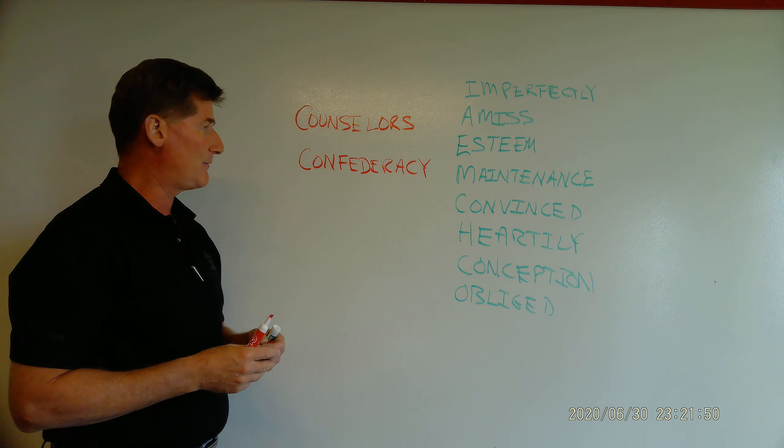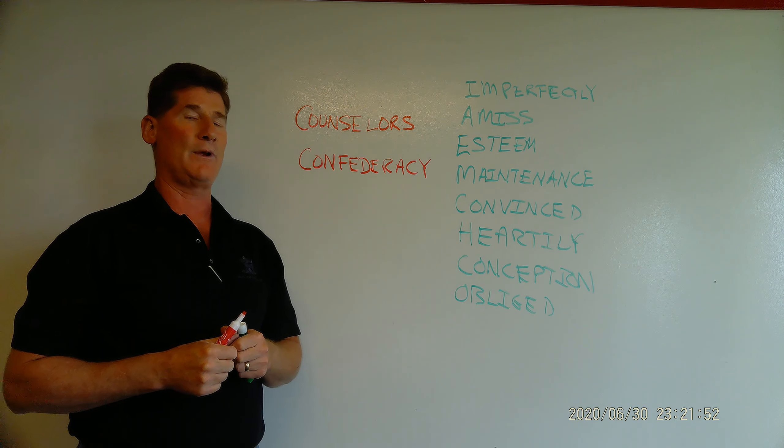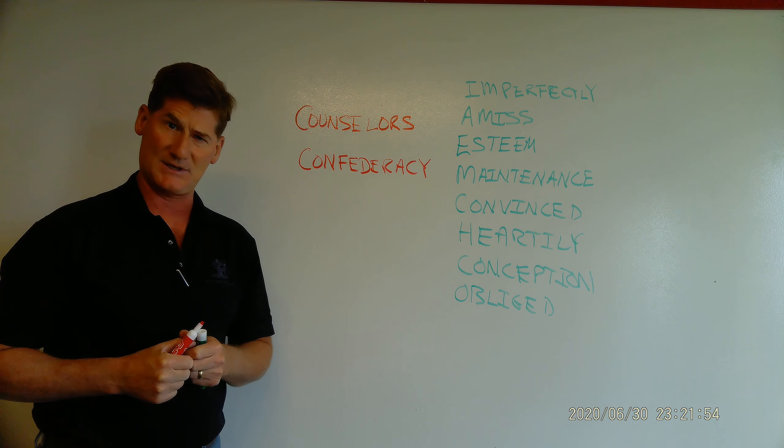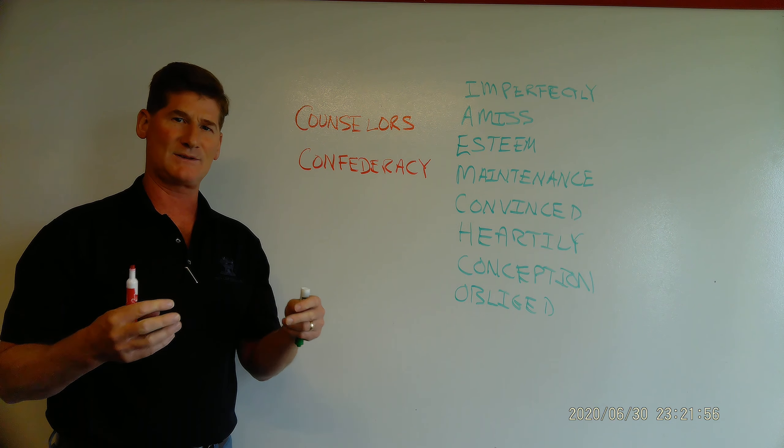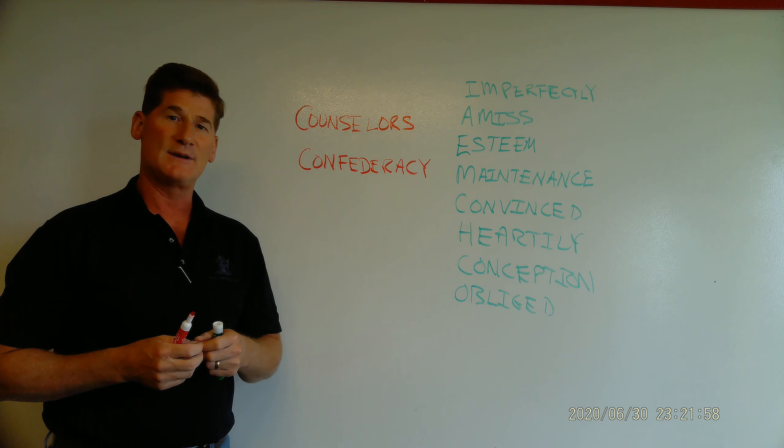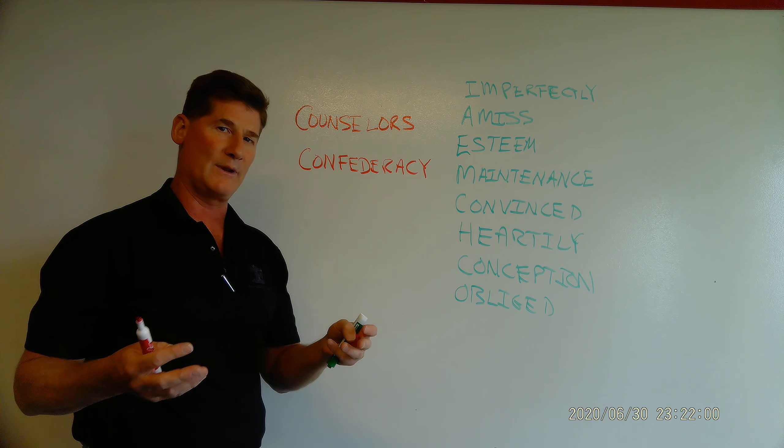Even before we had a Constitution, which you will study in character—that's very important—even before we had that, we had what was called the Articles of Confederation, which was a system of government that means a weak central government. It often does not work well.